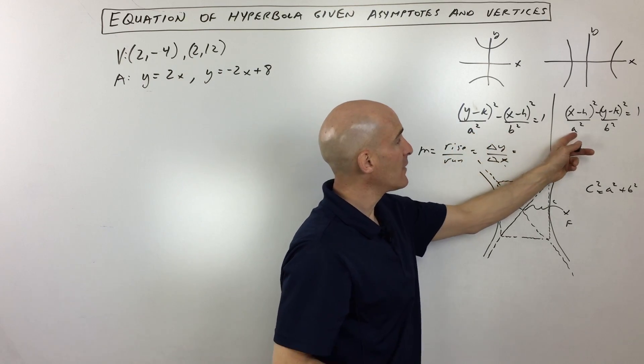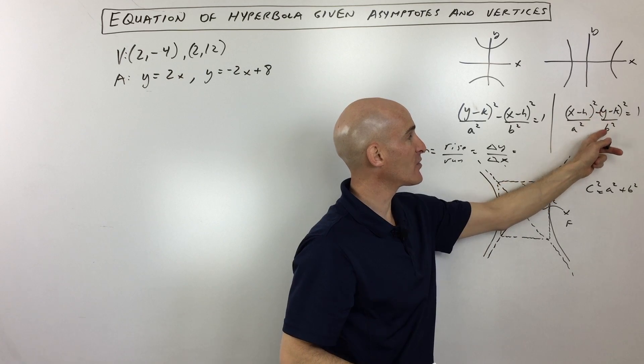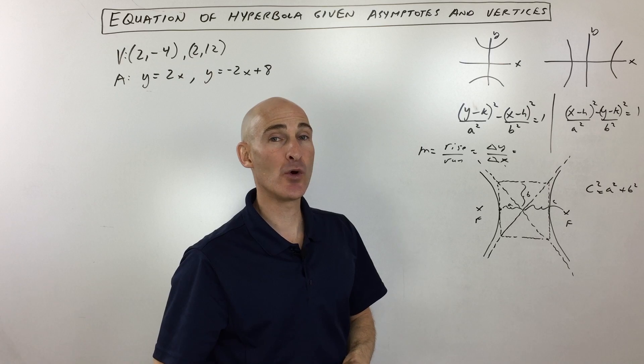So for this one it's going to be a over b, for this one the slope is actually going to be b over a. So it's easy to remember the number underneath the y is the rise, the number underneath the x is the run when you're calculating the slope for your asymptotes.